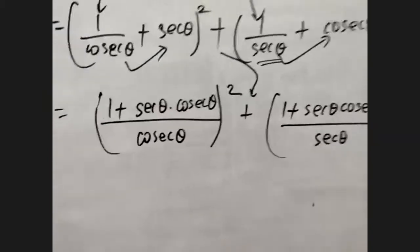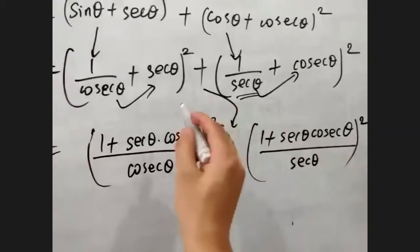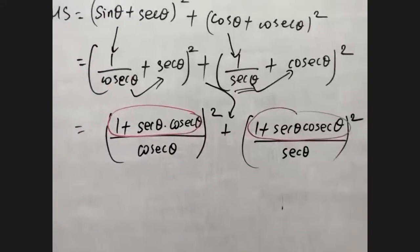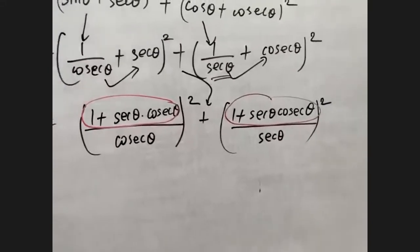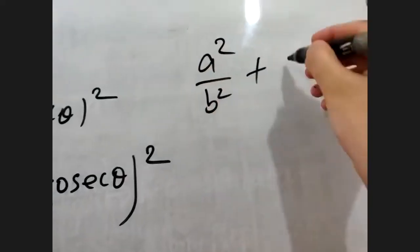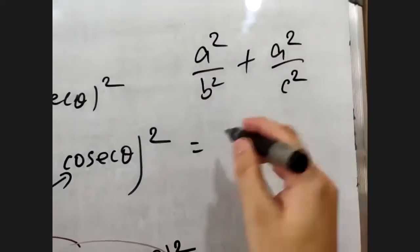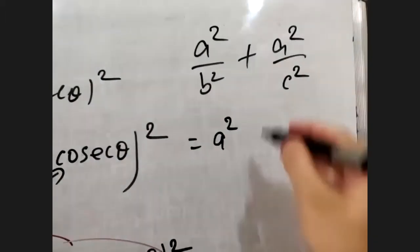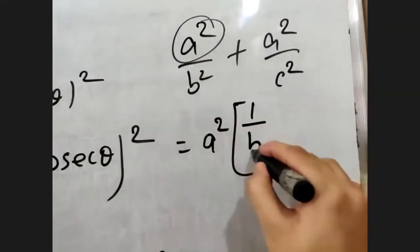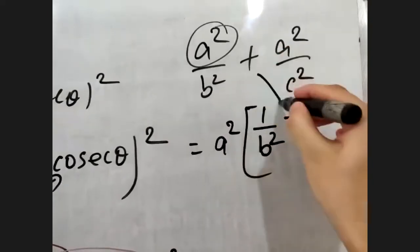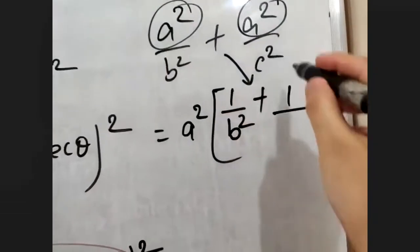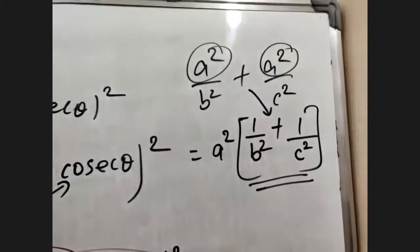Now observe: the numerator part is exactly the same in both terms, so these two can be taken as common. To understand this with simple algebra: if we have a²/b² + a²/c², we can take a² as common, leaving one over b² plus one over c². So we take the common numerator factor with its square without disturbing the denominators.